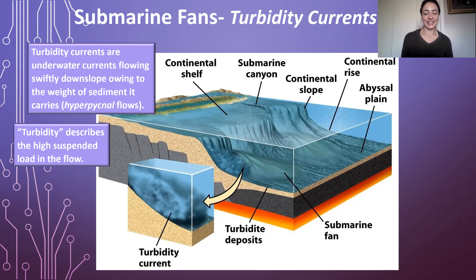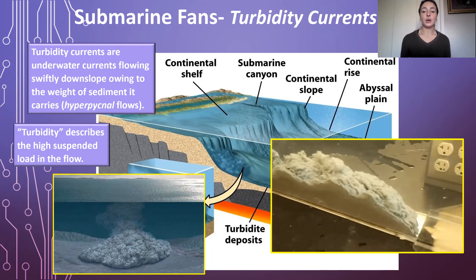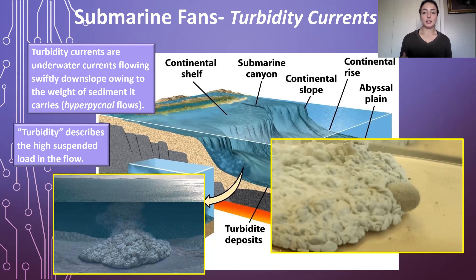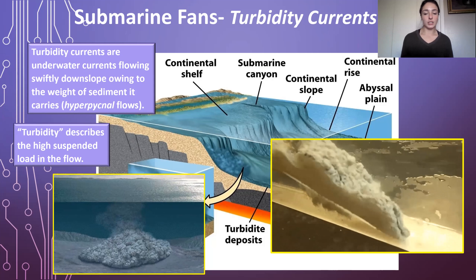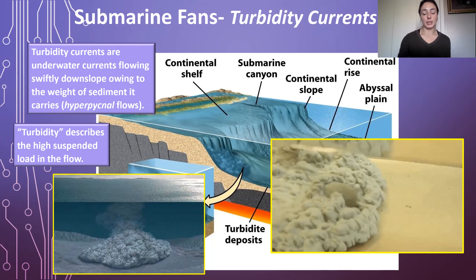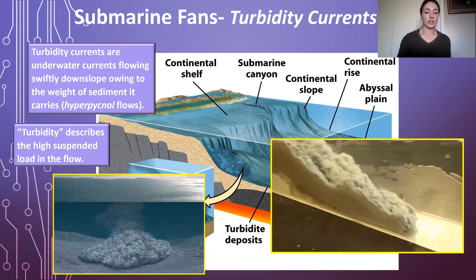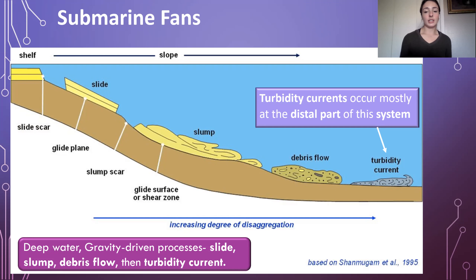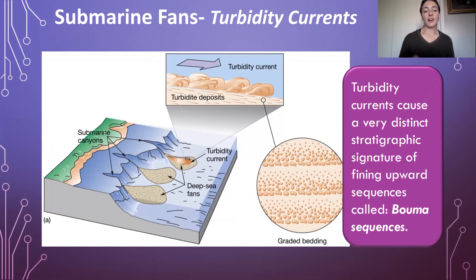In a visualization of a turbidity current we see this hyperpycnal flow hugging the basin floor, with sediment that plumes upward and then settles very slowly — this is what causes the distinctive stratigraphy of turbidites. Turbidity currents are not the only gravity-driven process in these systems, however. The order of deep-water gravity-driven depositional processes from proximal to distal is: sliding, then slumping, then debris flows, then turbidity currents. Because turbidity currents produce such a distinct stratigraphic signature, we'll focus mostly on their sedimentary structures and stratigraphy.